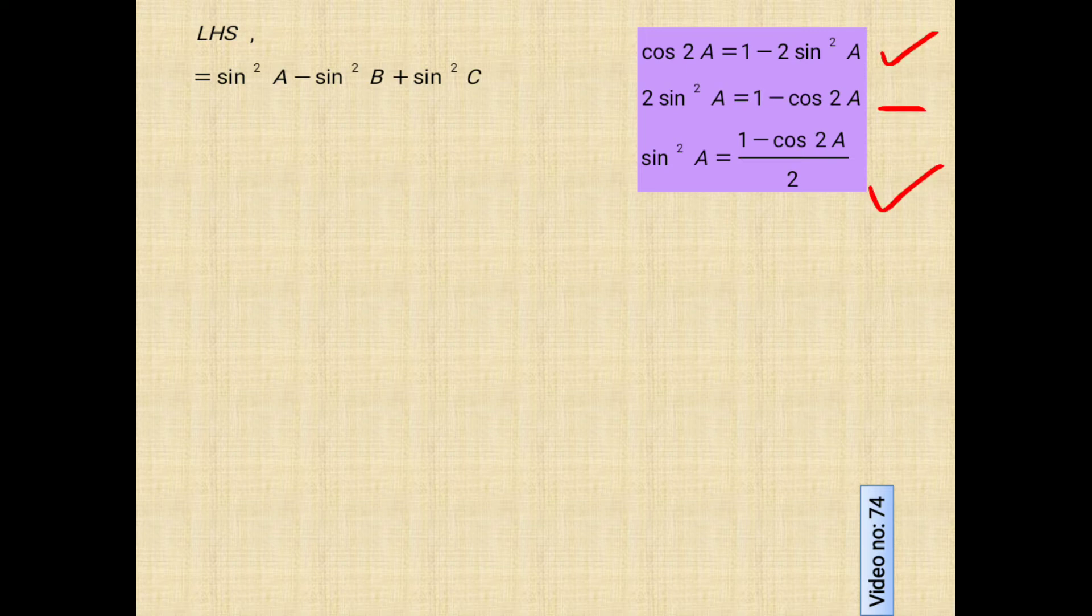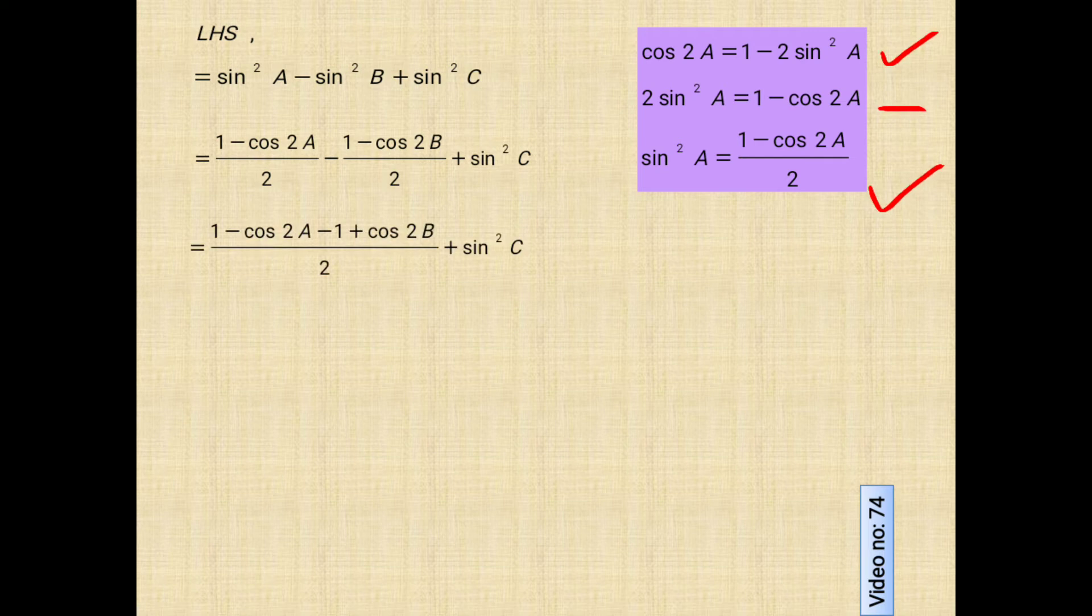Let's do the same for the first two functions in our next step. Here we go. And we will keep sine square C same as you see in the above step. Moving to the next step, 2 is taken as LCM and minus 1 plus cos 2B is written after simplifying with negative sign. Here we can cancel minus 1 and plus 1.